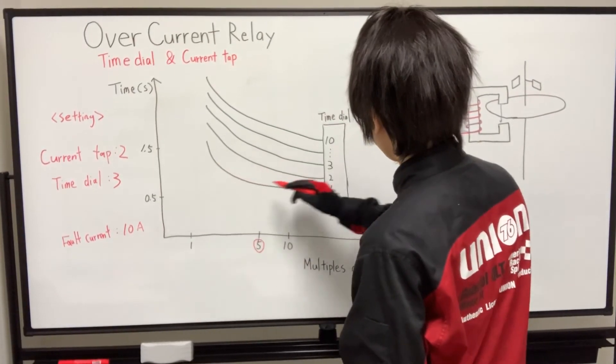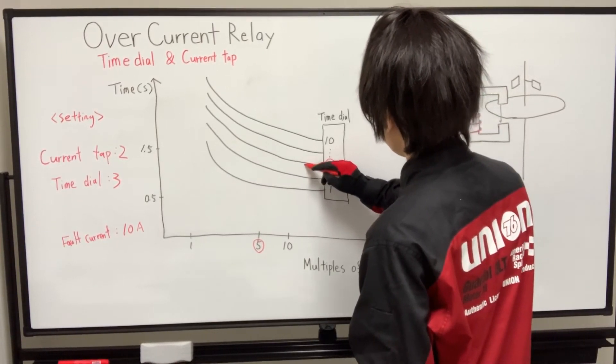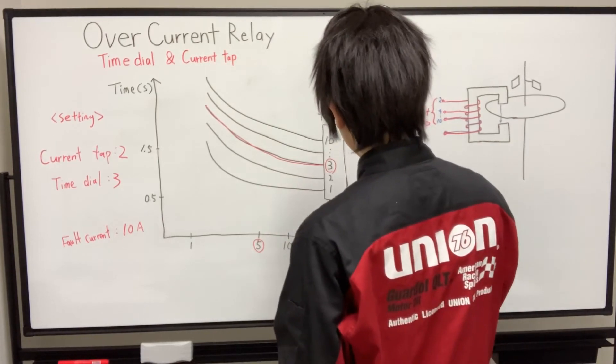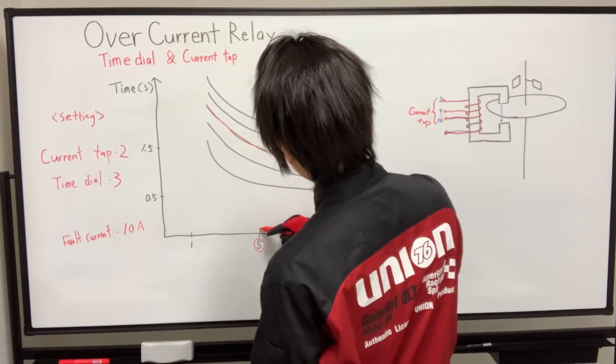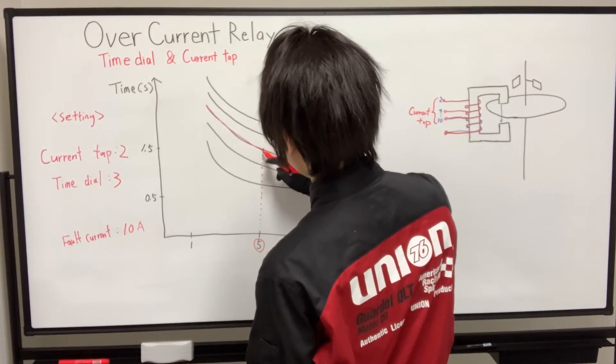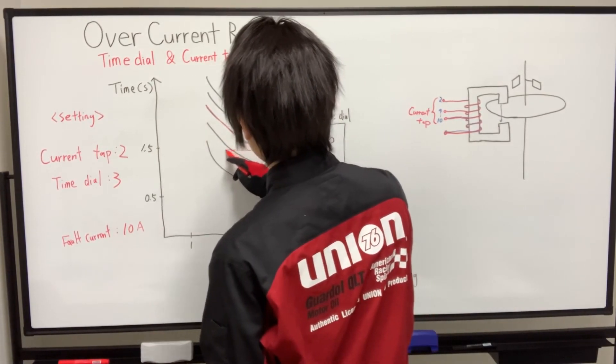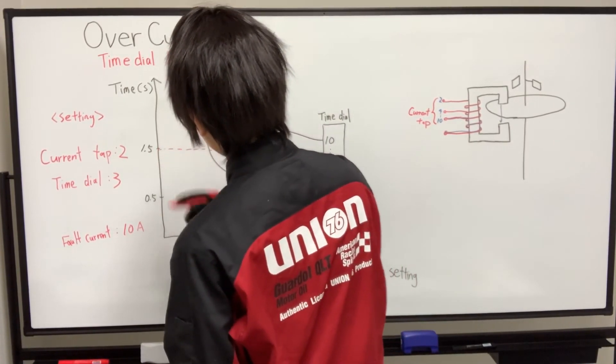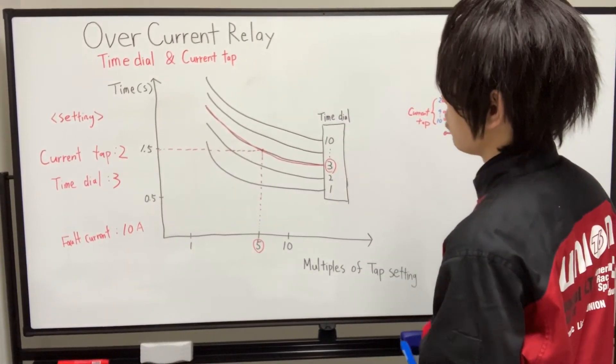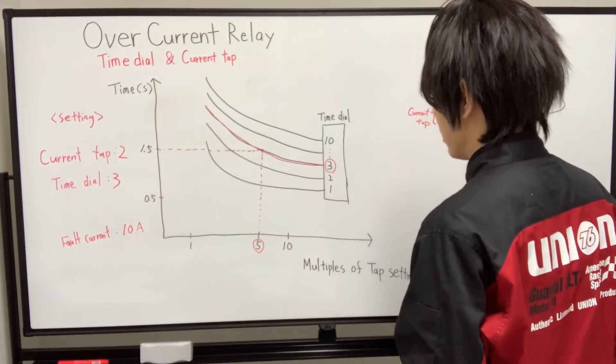And the time dial is number 3, so we need to look at this particular curve. And the 5 is here. So the operating time is 1.5 seconds. So if the overcurrent relay is set to these conditions and the fault current is 10A, the relay operates in 1.5 seconds.